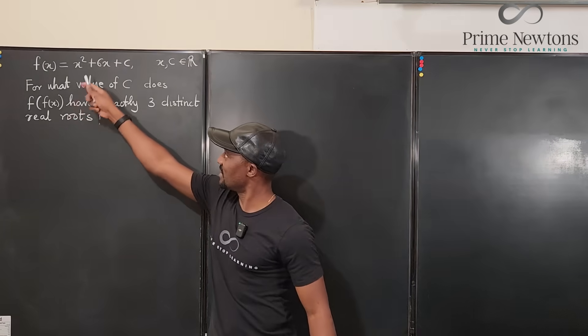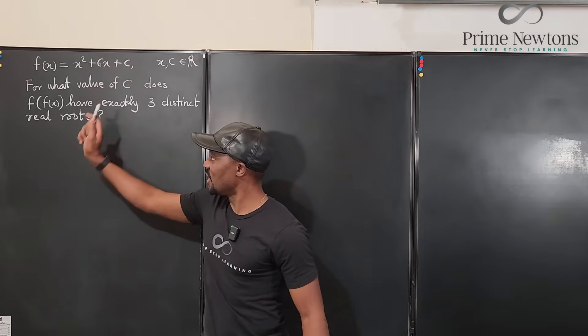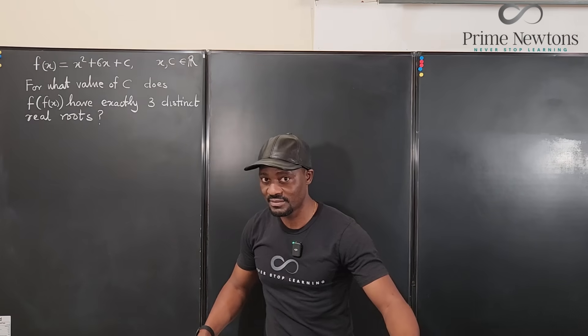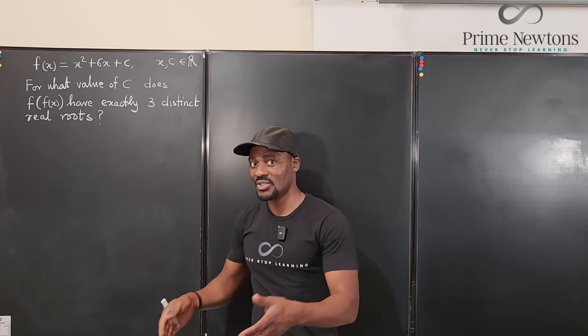So looking at this, because this is a quadratic, I know that f of f of x is going to be a fourth degree polynomial. And that's where the thinking starts.